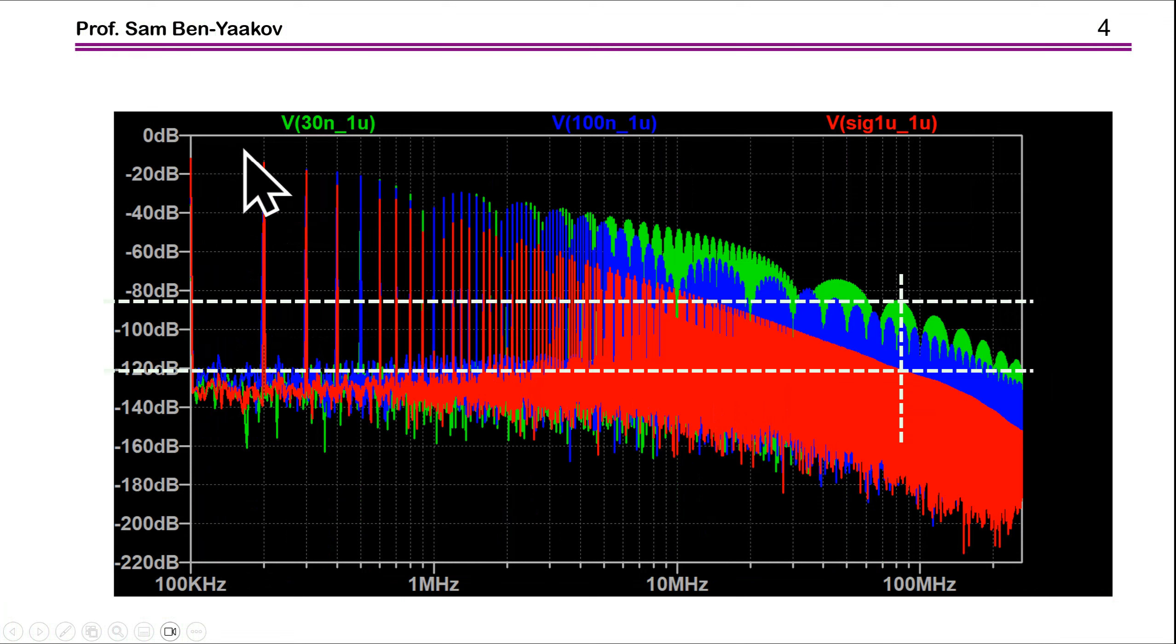The green is the 30 nanosecond rise time, the red is the one microsecond and you can see that in this range of a few say 80 or something like that megahertz the difference is a lot like 30 dB. That's a lot. And at low frequency they are about the same but there is a pronounced difference at high frequency meaning the faster they change, the more you have components of high frequency. I'm not going into the analysis just to show the phenomenon.